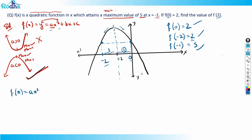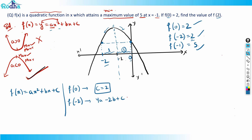f(x) = ax² + bx + c. The first equation: f(0) = 2. Putting x = 0 gives c = 2. Second equation: f(minus 2) = 2. Putting x = minus 2 gives 4a minus 2b plus c = 2. Since c = 2, we get 4a minus 2b = 0, therefore 2a = b.